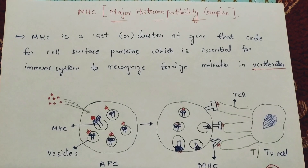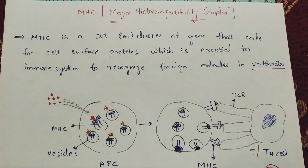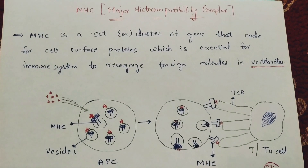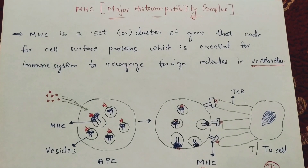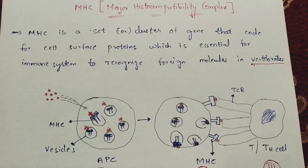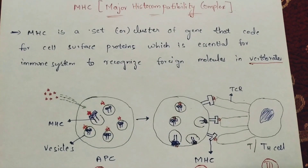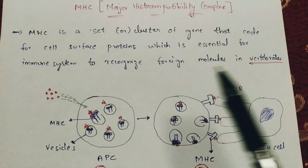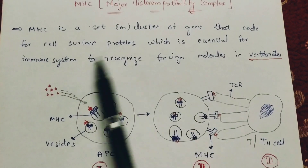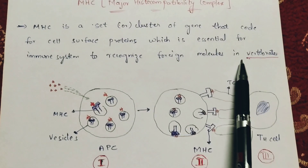Hi friends, my name is Farindra. In this video, I'm going to explain about MHC — Major Histocompatibility Complex molecules — its types and the differences between those types. MHC is a set or cluster of genes that code for cell surface proteins which are essential for the immune system to recognize foreign molecules in vertebrates.